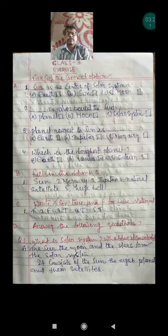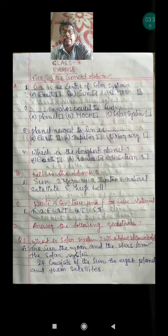What does it consist of? The Sun, the Moon, and the eight planets and their satellites.